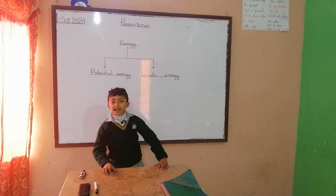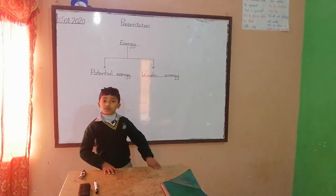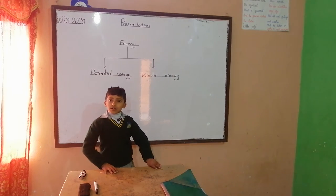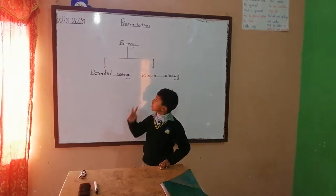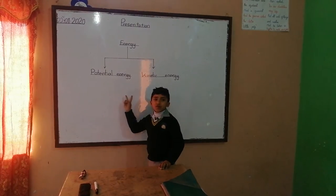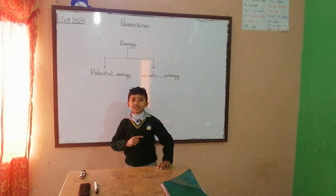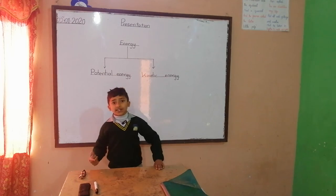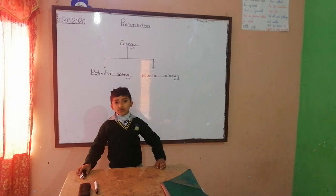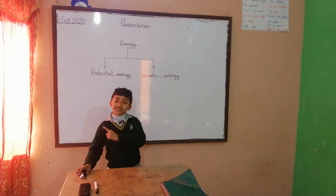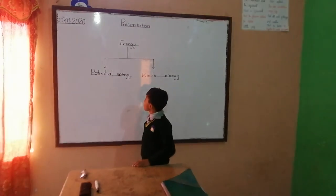I will tell you about the forms of energy. There are two forms of energy: potential energy and kinetic energy. Potential energy is stored energy. Moving and working energy is called kinetic energy.